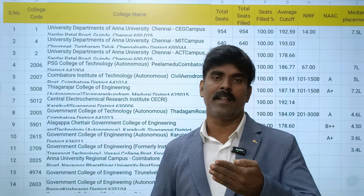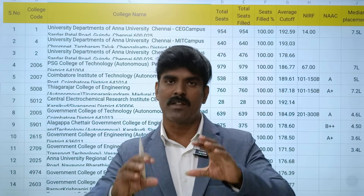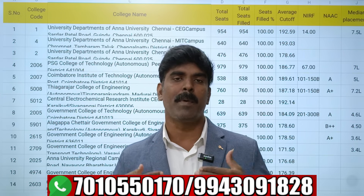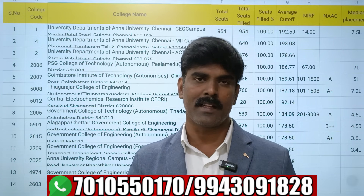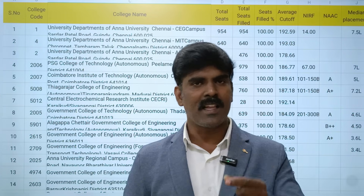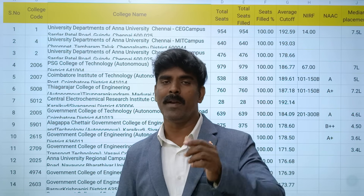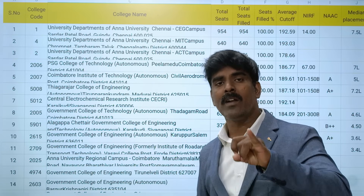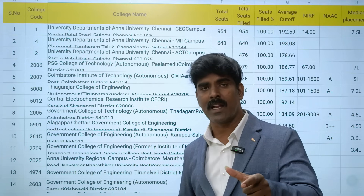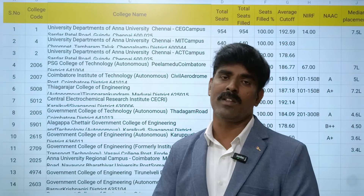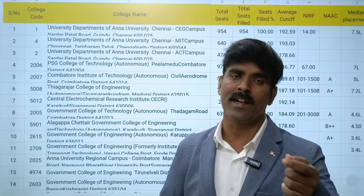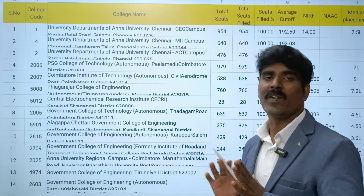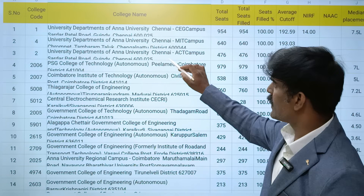Looking at students' preference order: first is government colleges, then government-aided colleges. Fees play a vital role - low fee and high value is very useful. Then there are government-aided Anna University Regional Campuses and autonomous colleges. For example, Anna University Panruti and Anna University Dindigul - there are 30-plus colleges but the top 15 are key.